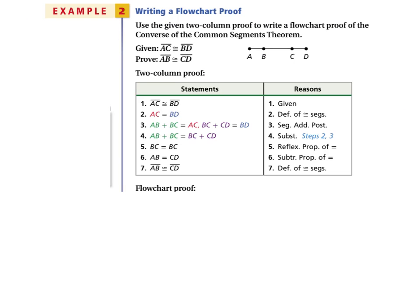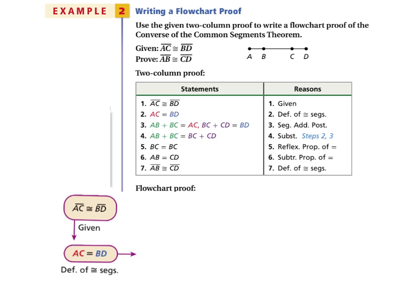In example two, we are given the two-column proof and we want to write a flowchart proof. We start with our given: segment AC is congruent to segment BD. We write 'given' underneath. Since the two segments are congruent, we can say they are equal by definition of congruent segments. Then, working backwards, AB plus BC equals AC and BC plus CD equals BD by the segment addition postulate.